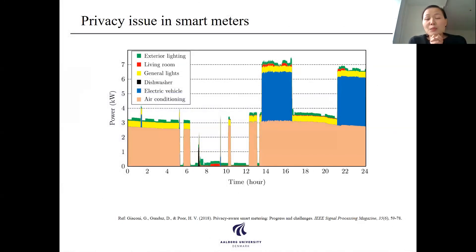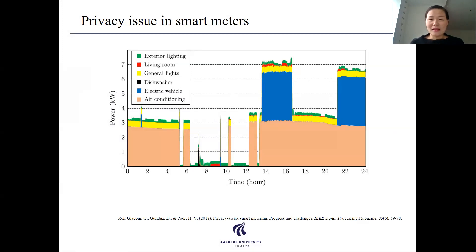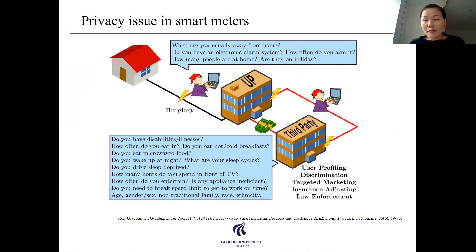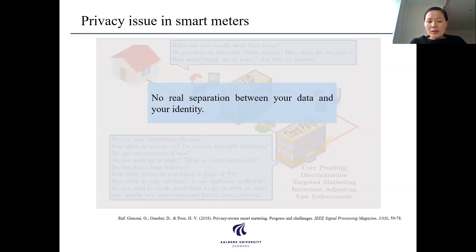So why is privacy important? Here is a very simple example showing the daily power consumption of your household. We can see that the power consumption doesn't seem like very important data — it's not your fingerprint, it's not your facial image, it's not your bank account. But actually from this simple information we can infer a lot of private information about yourself. For example, people can know whether you have a disability or illness, how many people live in your house, or whether you are away on holiday. So a lot of information can be leaked from this very simple power consumption data. We can conclude that there is no real separation between your data and yourself.